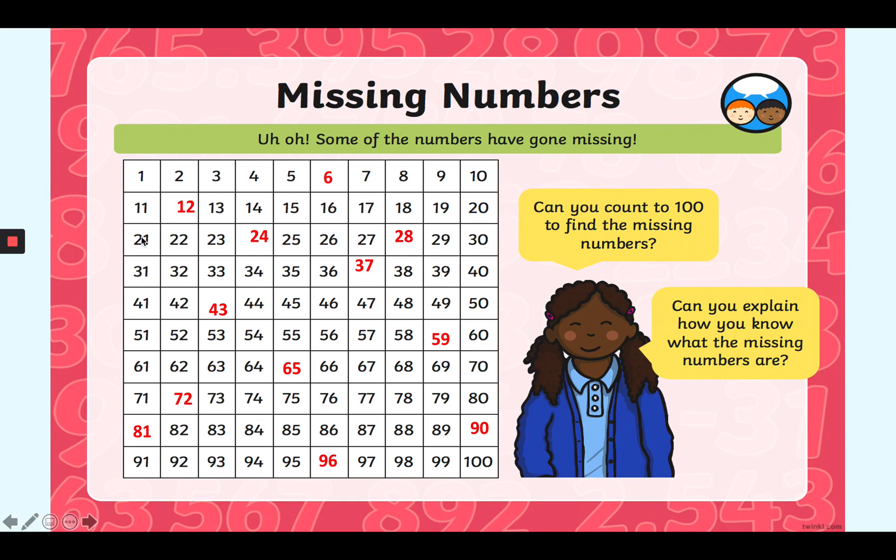And they also go up by 1 each time. So the number on the left, the tens number, that goes up by 1 each time. So 1, 2, 3, 4, 5 and so on. Have a look and see if you can spot any other patterns in this hundred square.